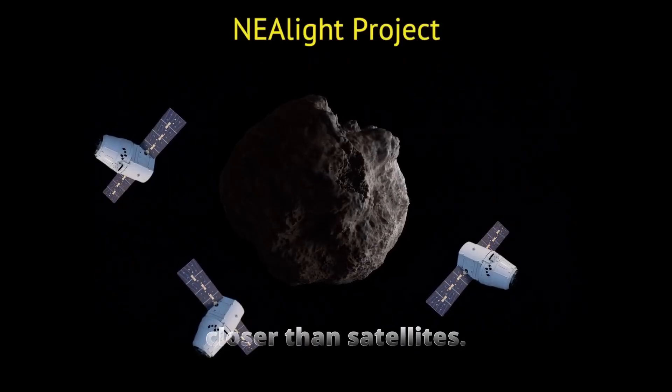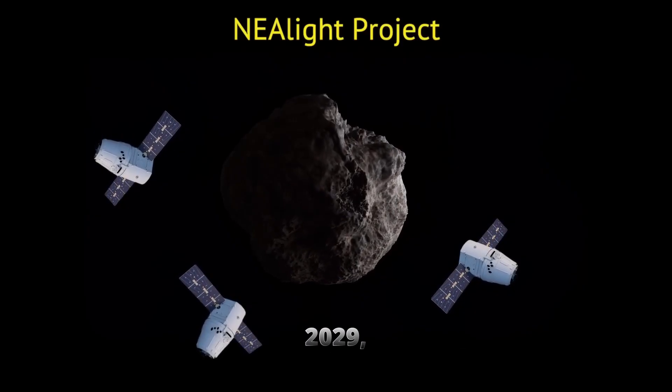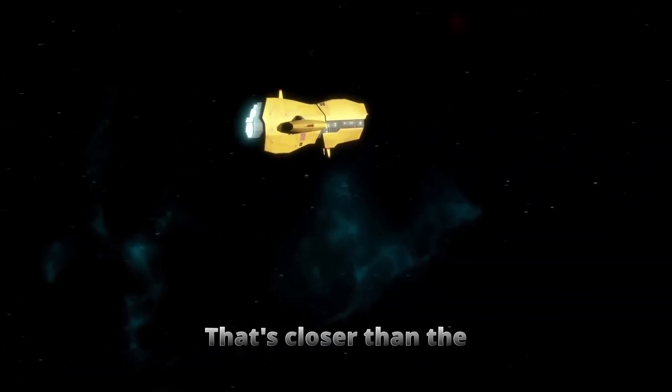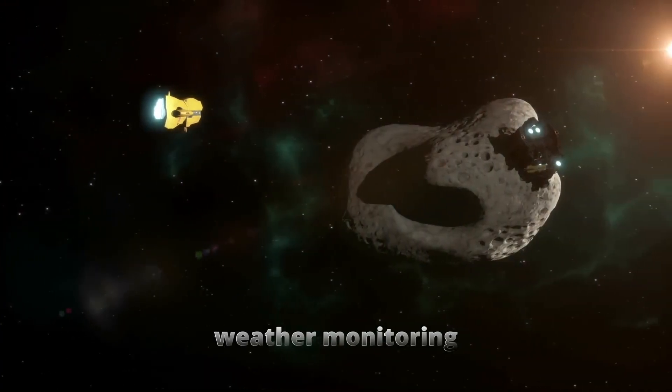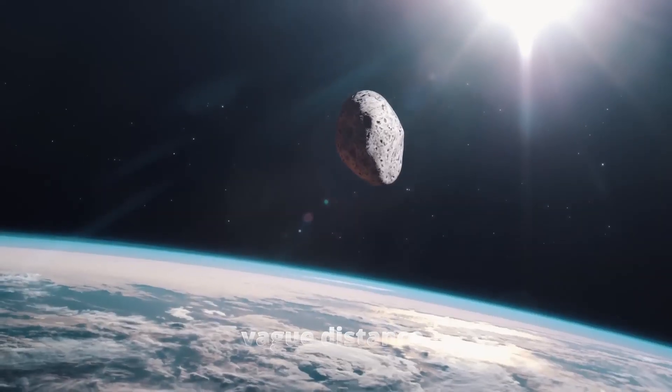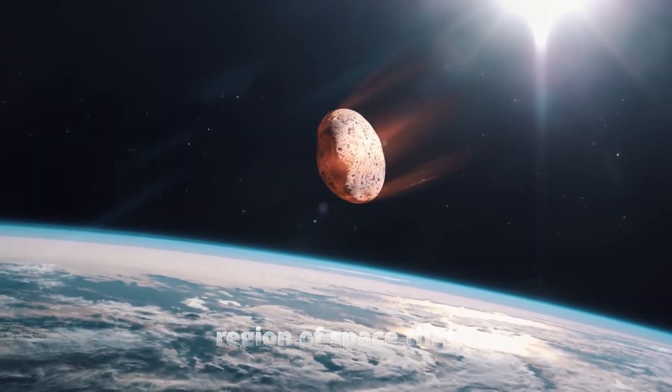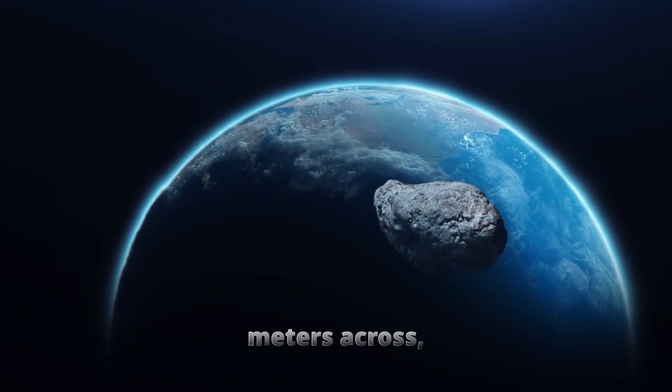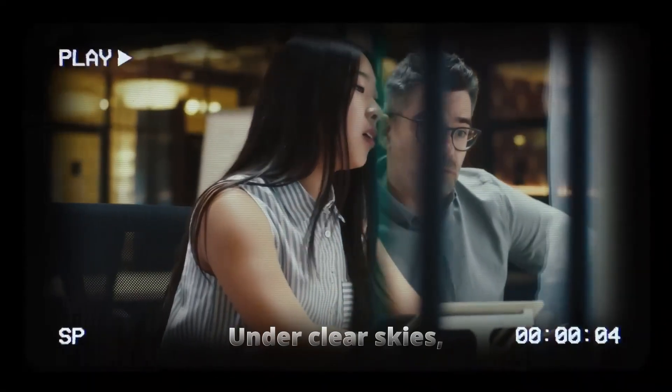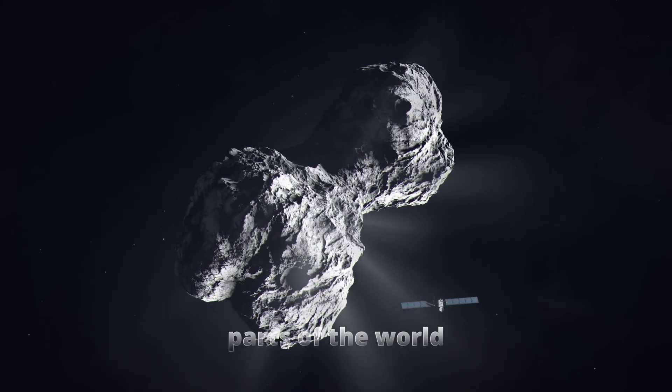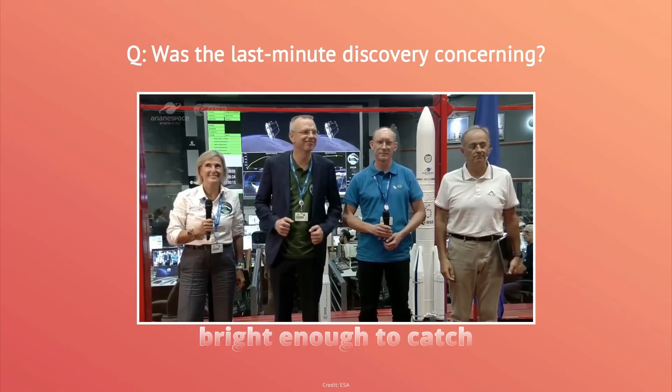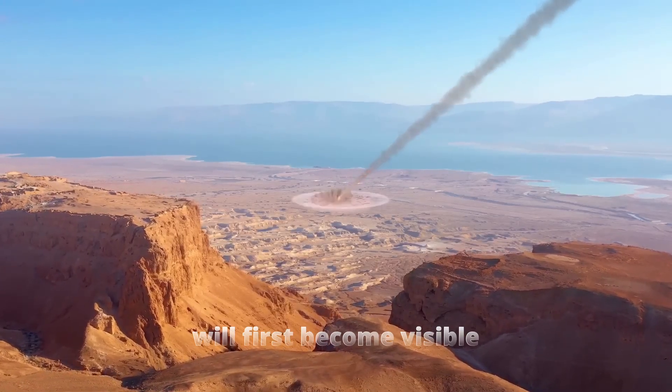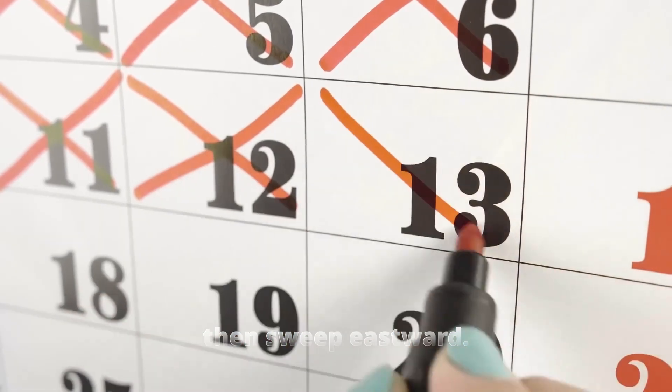The 2029 encounter closer than satellites. On April 13, 2029, Apophis will pass only about 31,000 kilometers from Earth's surface. That's closer than the geostationary satellites that handle weather monitoring and communications. It's not zooming by in the vague distance. It will glide through a region of space that normally only human-made machines occupy. Because it's large, roughly 370 meters across, it won't need a telescope to spot. Under clear skies, people in certain parts of the world will see it as a moving point of light, bright enough to catch with the naked eye. Its flyby path is already charted in detail. Apophis will first become visible in the night over the southern Atlantic, then sweep eastward.